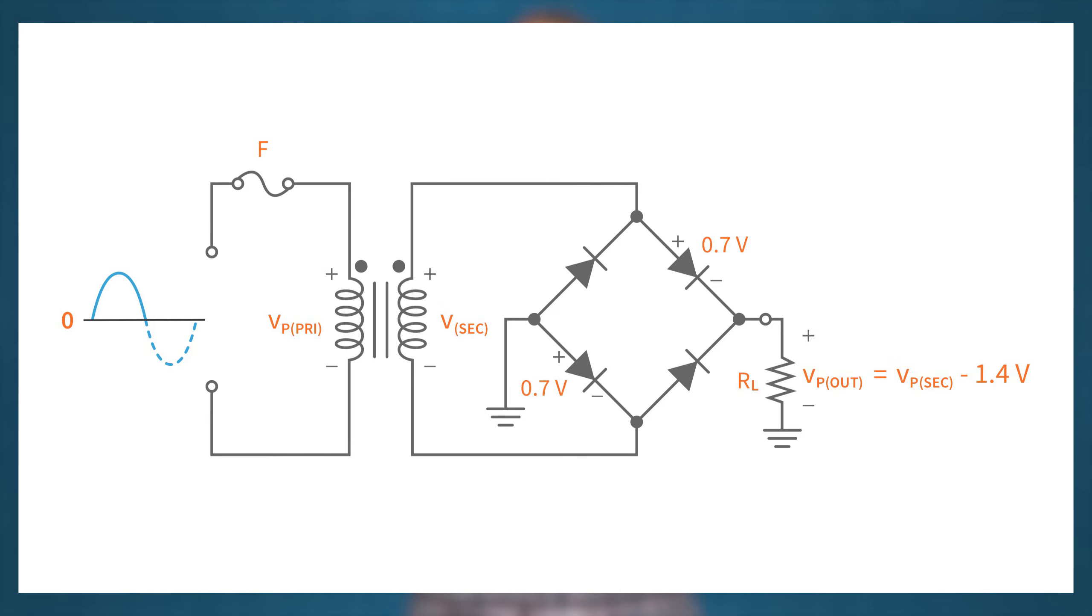The peak output voltage of a bridge rectifier, which appears across the load R, is equal to the peak voltage of the secondary winding of the transformer if we consider the diodes ideal. However, in reality, there's a voltage drop across a diode whenever current flows through it. For a silicon diode, let's assume that the voltage drop is 0.7 volts.